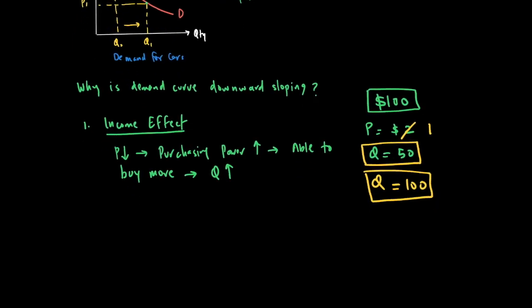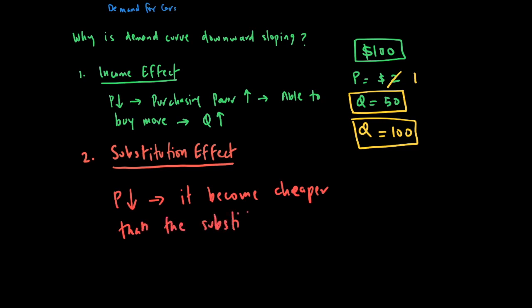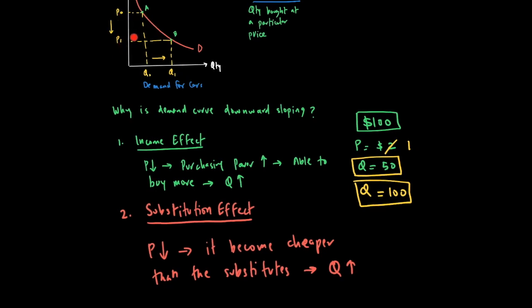The second reason is the substitution effect. The substitution effect says that when the price of a good goes down, it becomes cheaper than its substitutes. Substitutes are rival goods — for example, Coke and Pepsi are substitutes. When the price of Coke goes down, Coke becomes relatively cheaper than Pepsi, and people will buy more Coke and less Pepsi. So price goes down, you buy more of that good because it's now cheaper than its substitute, making quantity demanded go up. These are the two reasons — income and substitution effect — why our demand curve is downward sloping.